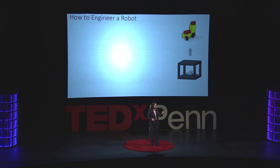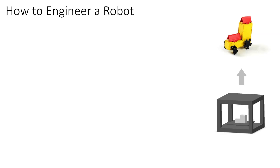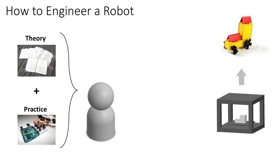But that's actually a very small part of what it takes to make a robot. The full process looks like this: first, we have a large body of knowledge, theory, and practical examples that we have to combine together and then stuff into the brain of an engineer in training. And that takes a couple of years.